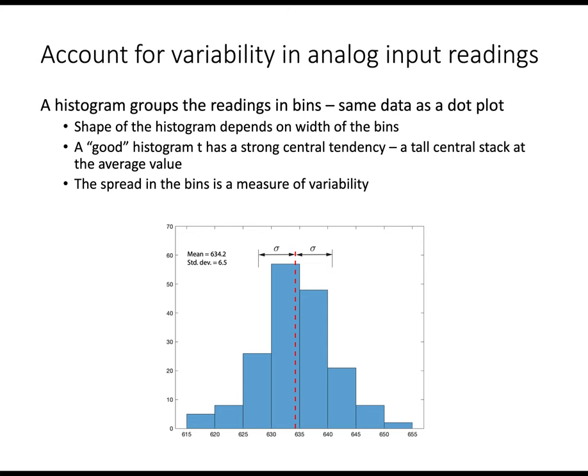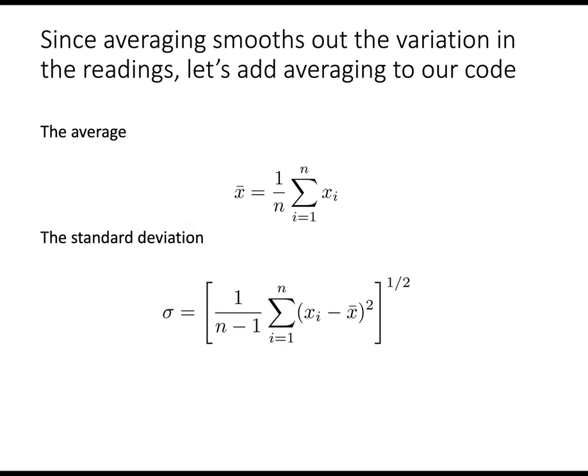We can use an alternative to the dot plot called the histogram. A histogram uses the same data, but it groups it into bins. Each of the blue rectangles in this plot are a bin, and they're five units wide. In this case, the central tendency is really quite apparent. So we've decided that computing the average is a good thing because it smooths out the variation in the readings. And we're going to add that to our code. We're going to use the average formula here first. In a later slide presentation, we'll talk about how to incorporate the standard deviation.